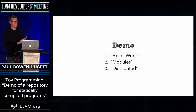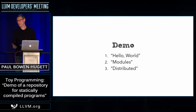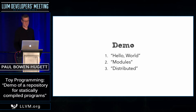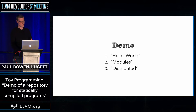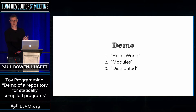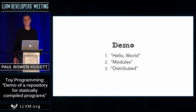So the demo is in three parts. The first one is hello world, because you have to have a hello world demo. The main demo is the modules one, where I'm going to take a program split into three modules and compile and link the modules separately. And then the last one, the distributed demo, is showing how this might work in a distributed environment.